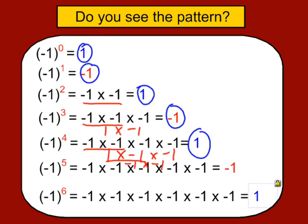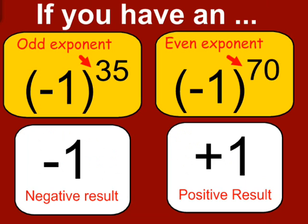What you'll notice is when the exponent is an even number, you will end up with a positive result when you have a negative base. When the exponent is an odd number and you have a negative base, the result is going to be a negative number. So just remember: negative base with odd exponent gives a negative result; negative base with even exponent gives a positive result.